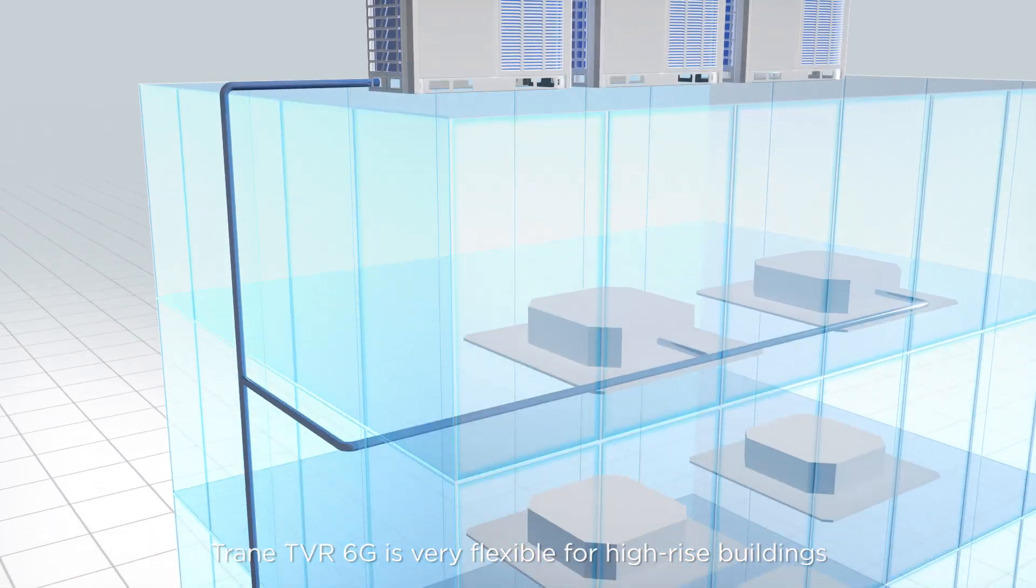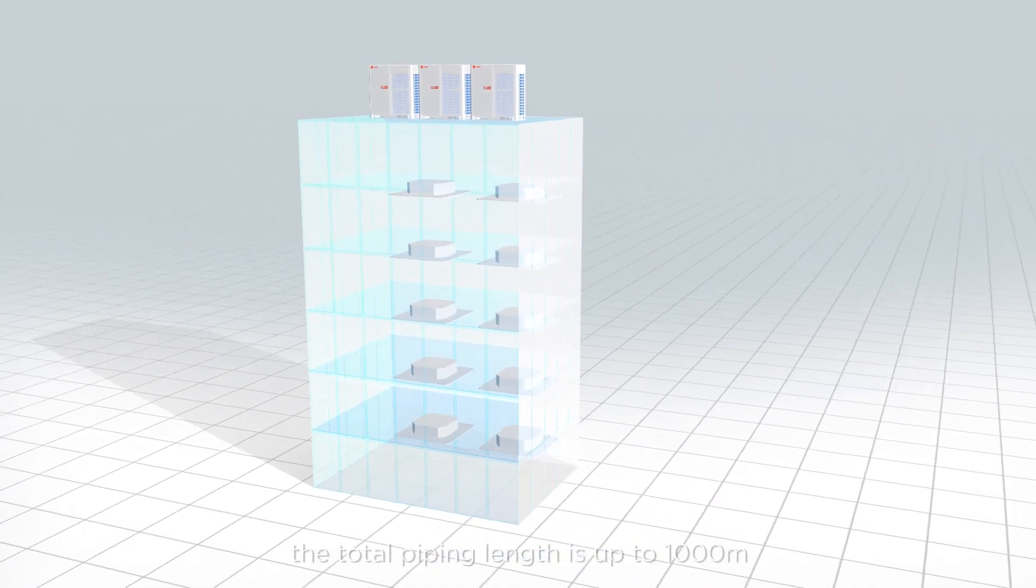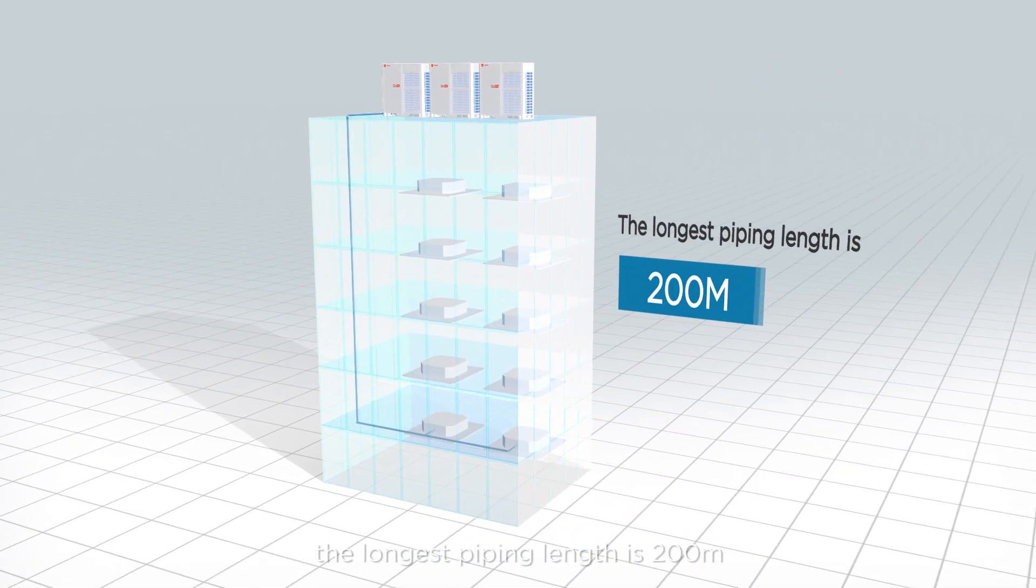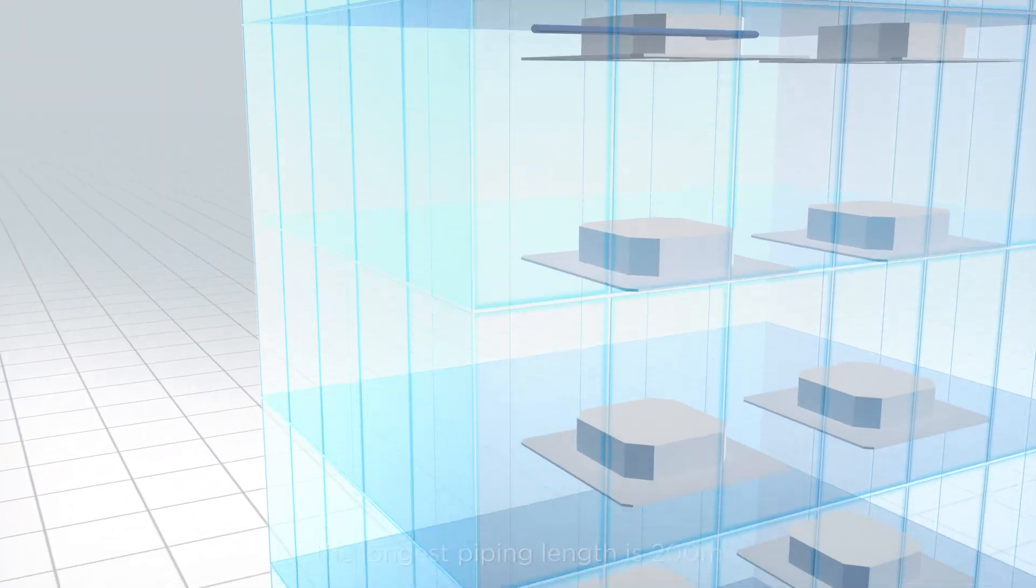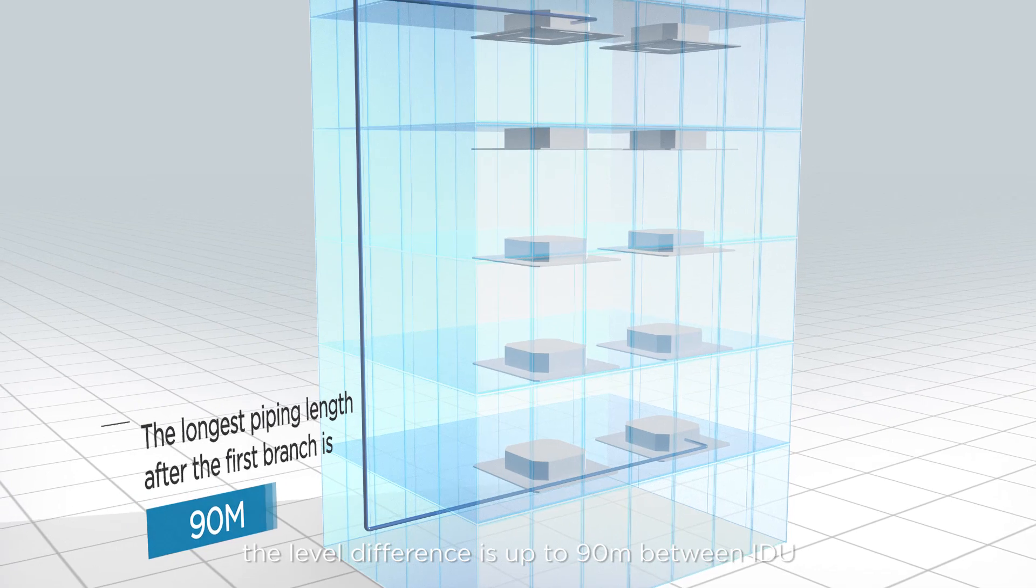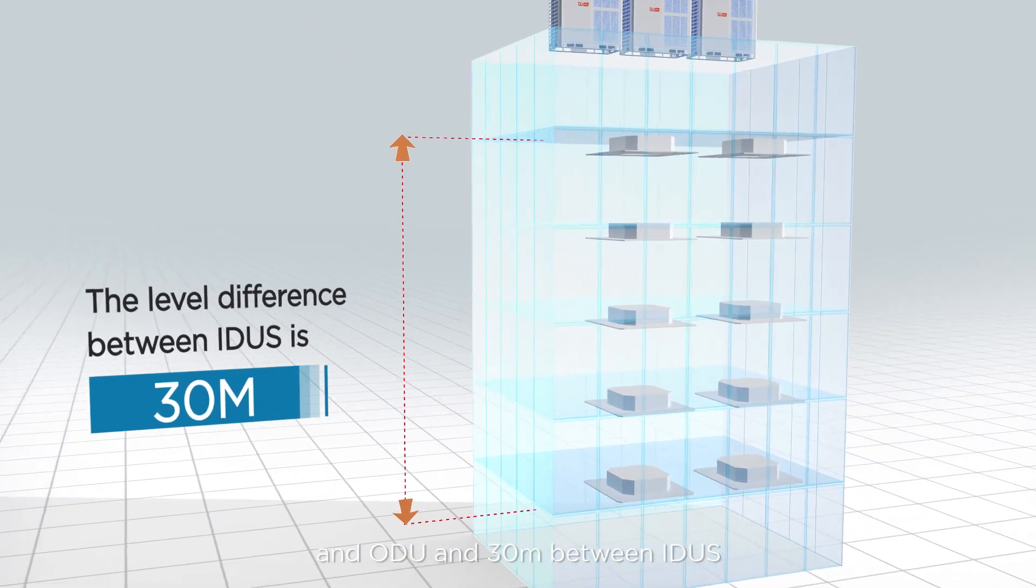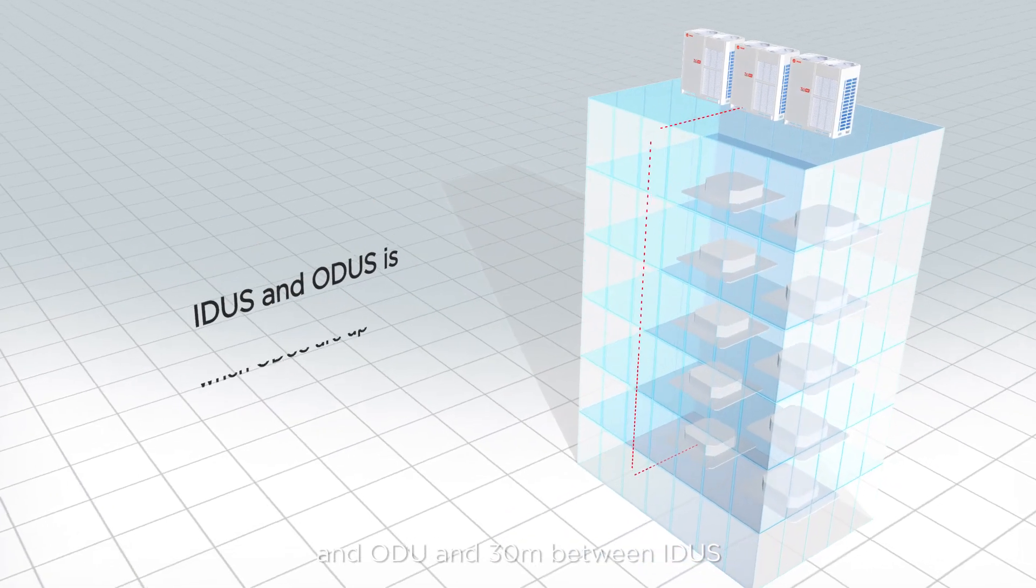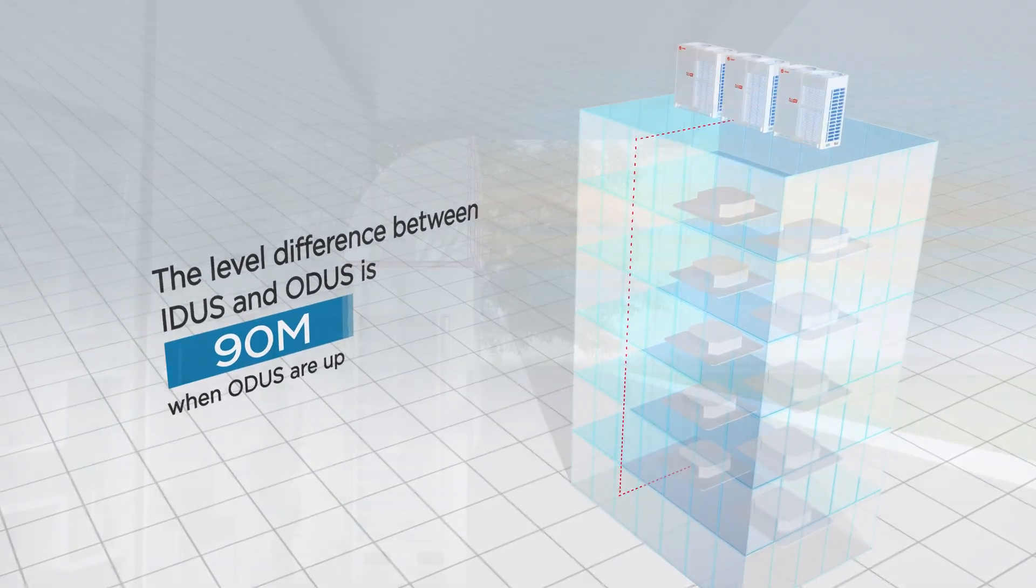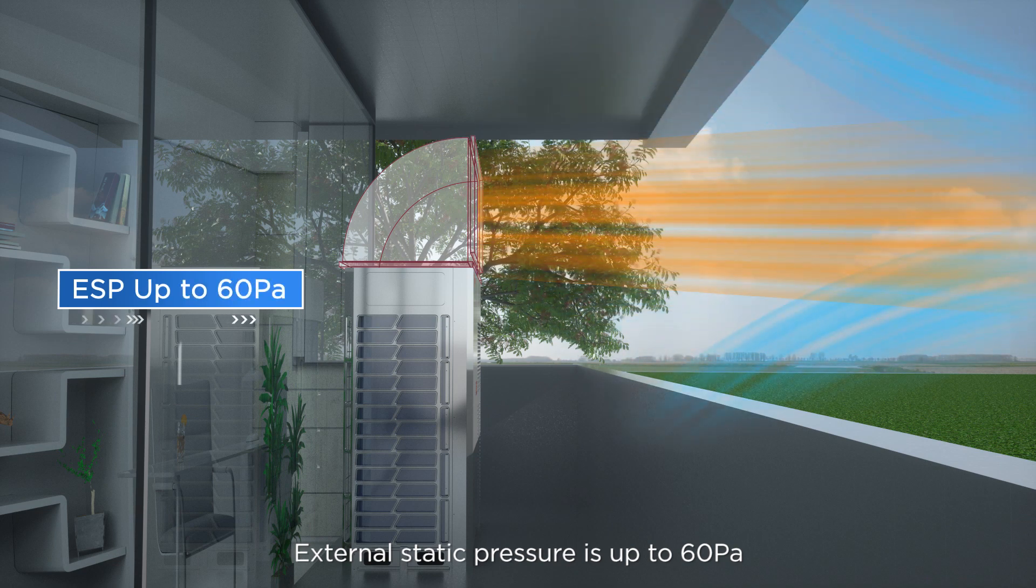TrainTVR 6G is very flexible for high-rise buildings. The total piping length is up to 1000 meters. The longest piping length is 200 meters. The level difference is up to 90 meters between IDU and ODU and 30 meters between IDUs. External static pressure is up to 60 PA.